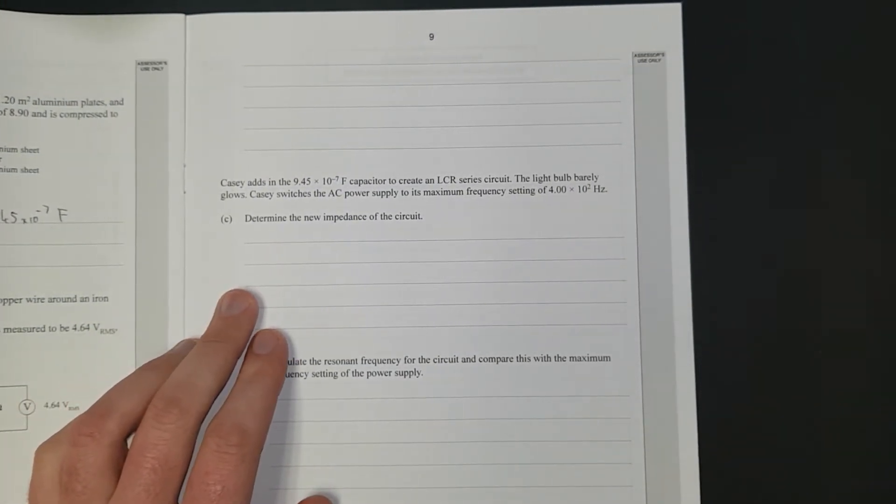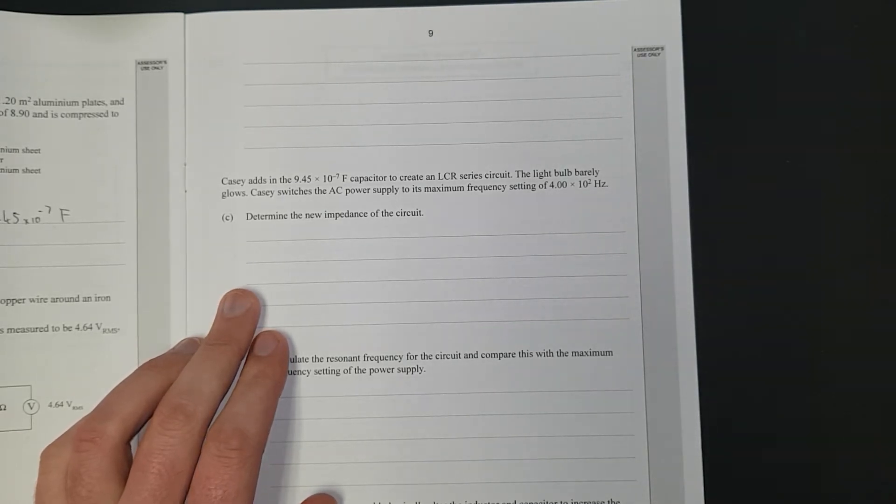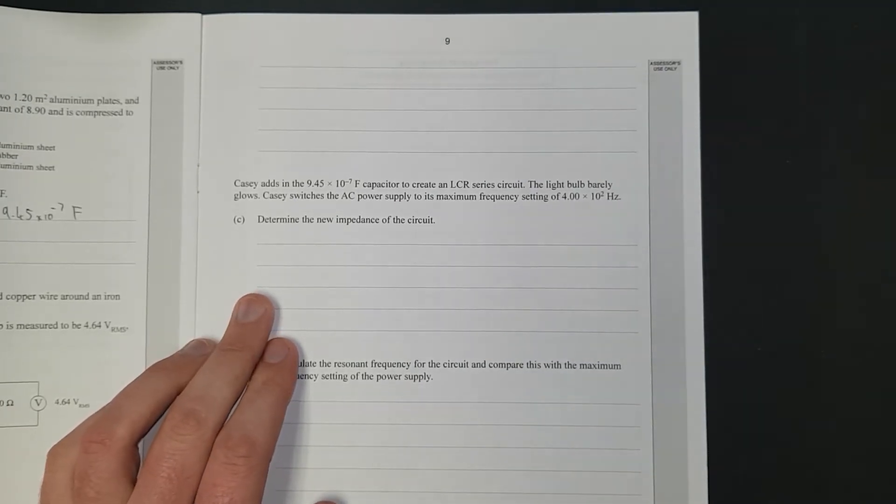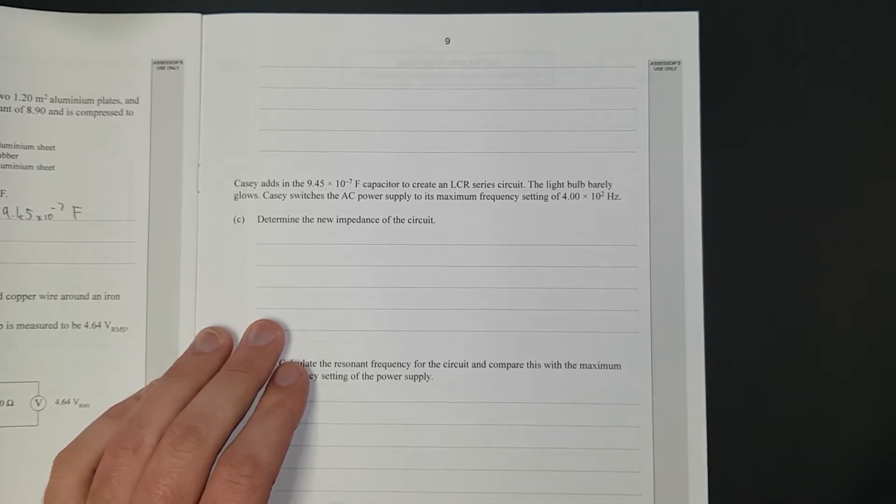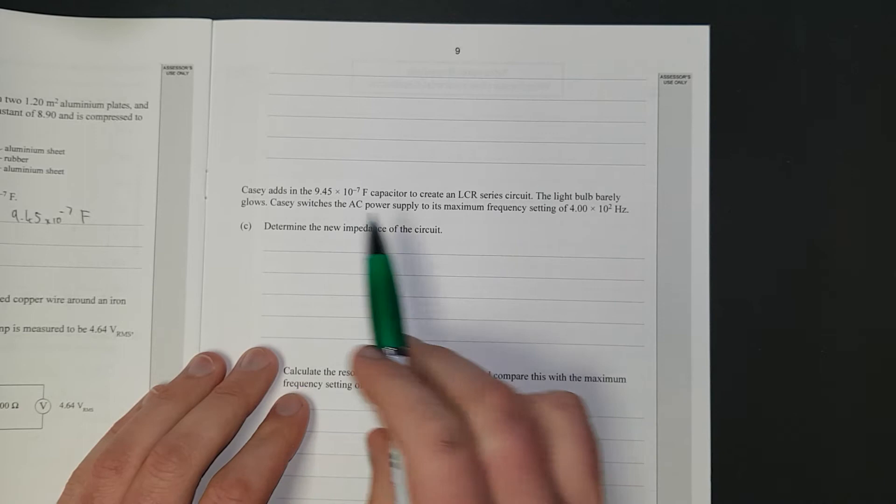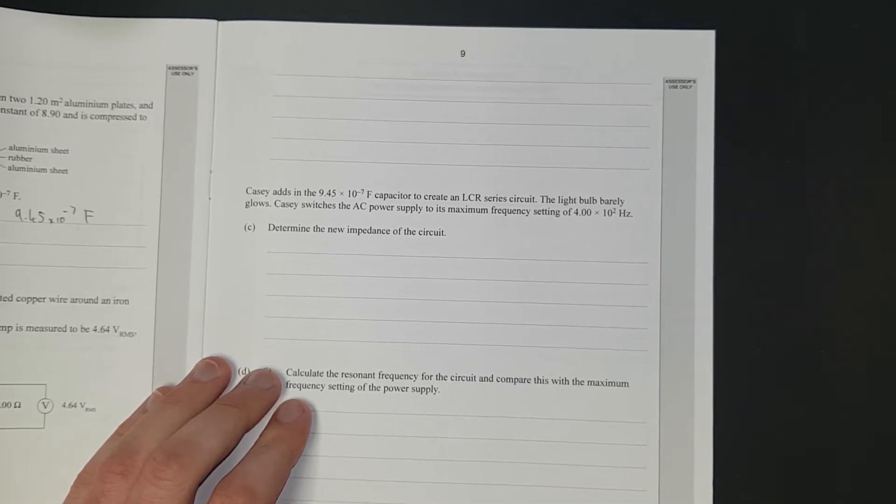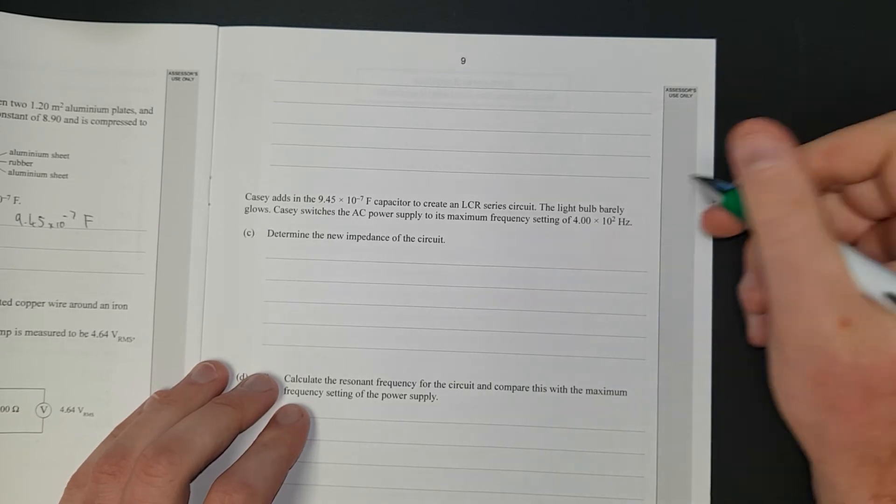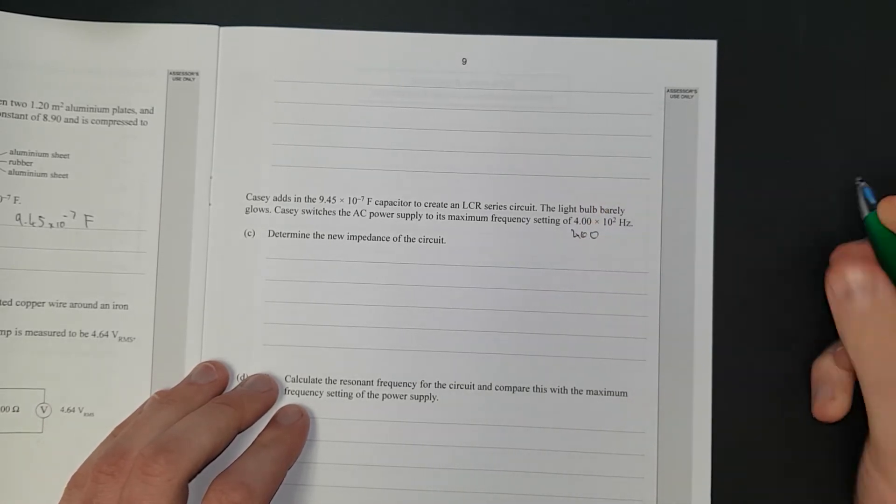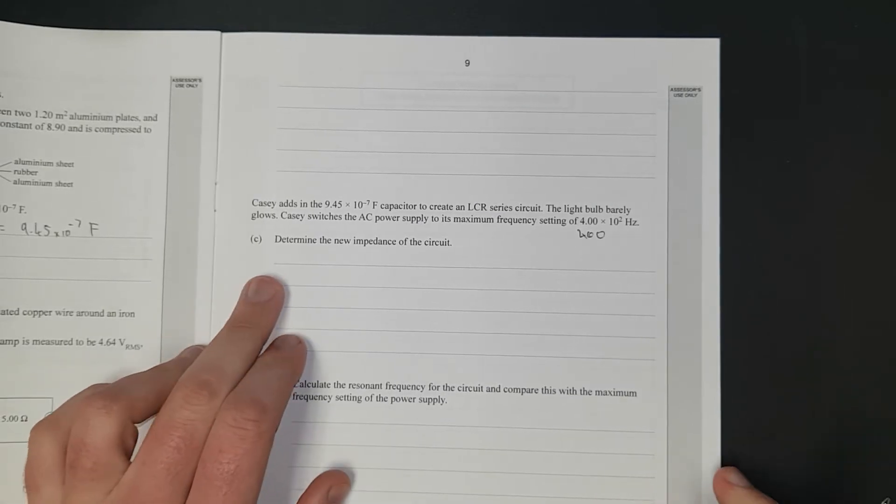If there's a show question you can't just work your way through the numbers. You gotta have formula, formula, working, working, formula, working, equation rearrangement, working, and then answer. Otherwise you don't get the points. We are going to add a 9.45 times 10 to the negative 7, 945 nanofarad capacitor. It's created an LCR circuit. The light bulb barely glows. KC switches the AC power supply to its maximum frequency of 400 hertz.